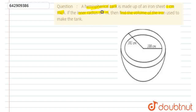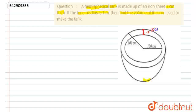Look at the figure — it is a hemispherical tank. The iron sheet thickness is 1 cm. The inner radius is 1 meter. We say that the inner radius is 1 meter, which is equal to 100 cm.